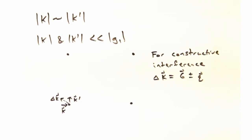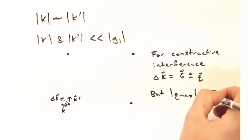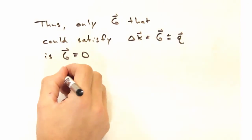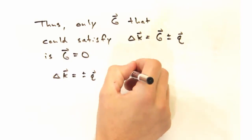Remembering that for inelastic scattering, we need delta k to equal g plus or minus q for constructive interference, we have only a q max here from phonons of pi over a. And thus the only g that can satisfy delta k equals g plus or minus q is going to be at g equals zero,